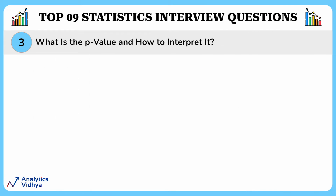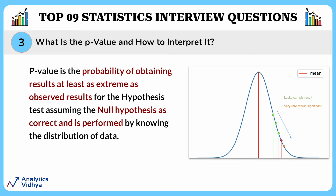The next question asks what the p-value is. P-value is a fundamental part of data analysis and therefore a common statistics interview question. The p-value is the probability of obtaining results at least as extreme as the observed results for a hypothesis test, assuming the null hypothesis is correct, and is determined by knowing the distribution of the data. In simple words, it is a measure that helps you decide if your experiment's results are meaningful or just due to chance.